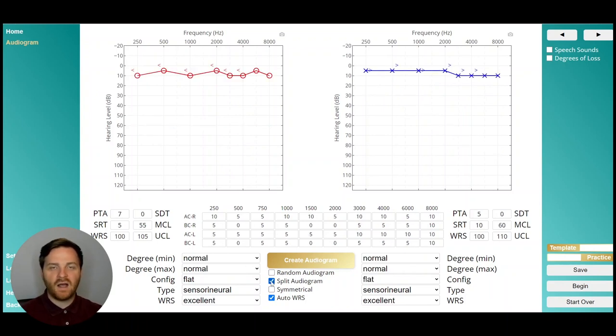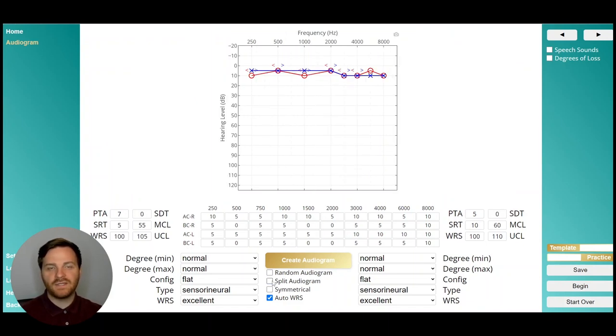The next setting down here is split audiogram. Sometimes it's easier to see the audiogram, especially with asymmetries and masking, if you overlay the two ears on top of each other. If you uncheck split audiogram, it will do exactly that.